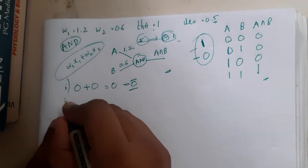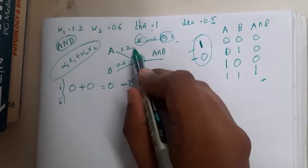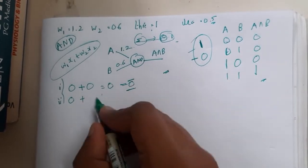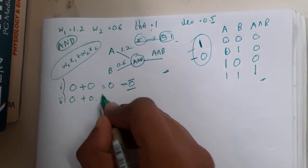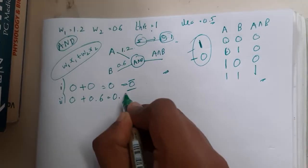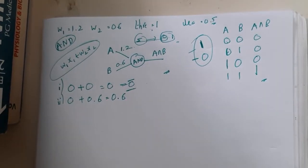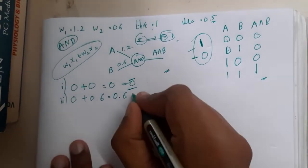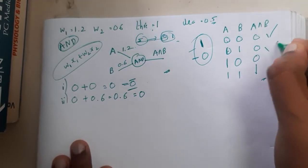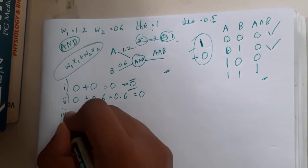Second case: A=0, B=1. 0×1.2 = 0, 1×0.6 = 0.6, sum = 0.6. Is 0.6 greater than or equal to threshold 1? No. So output is 0, which matches target 0. We passed two cases in the first pass.